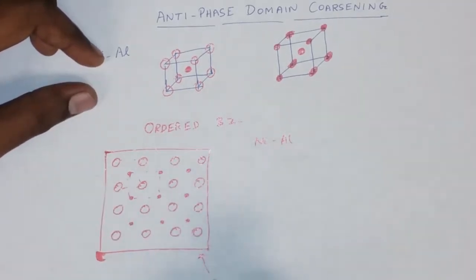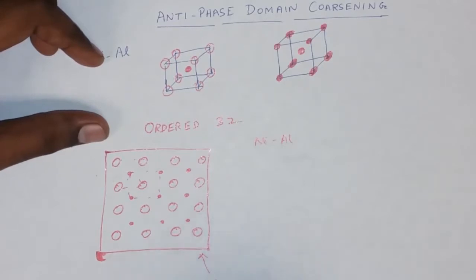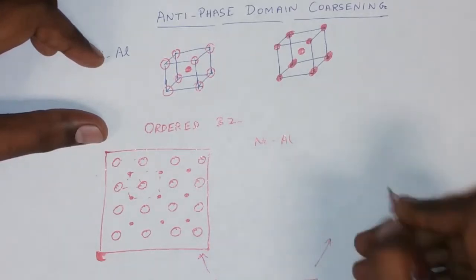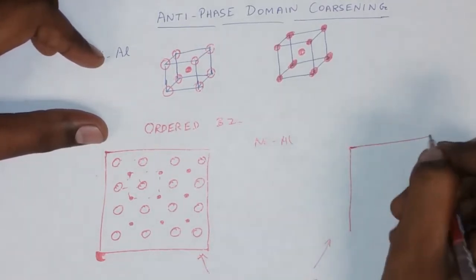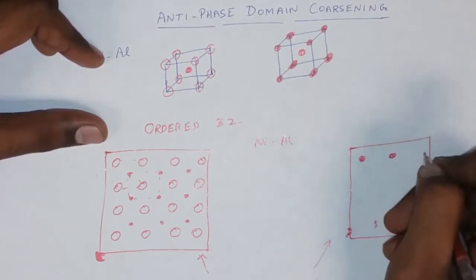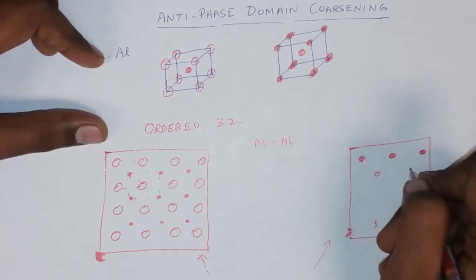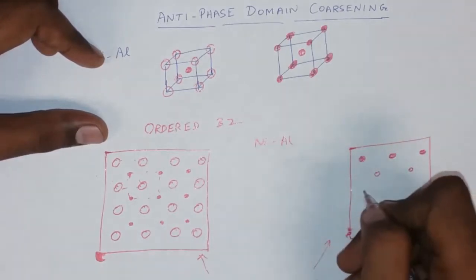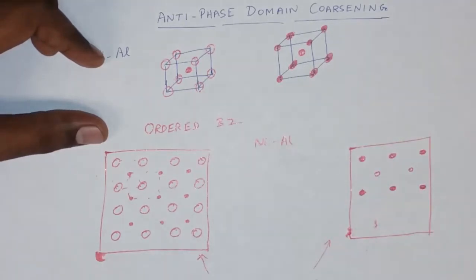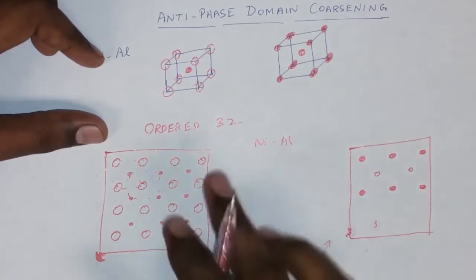Now this is going to represent one part of a domain. However, there is going to be another portion where essentially your nickel is going to be on top and your aluminium is going to sit in the second layer. Both of these are going to exist in the lattice. However, they are not going to exist together.